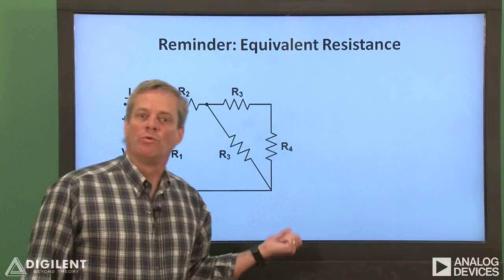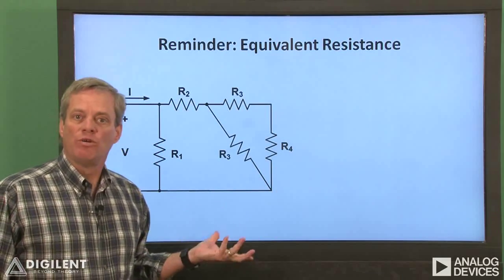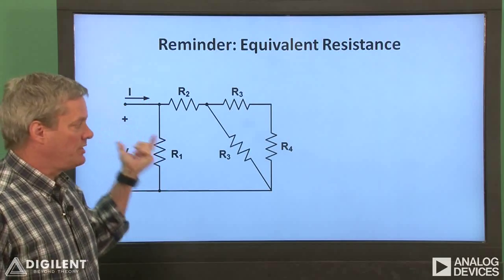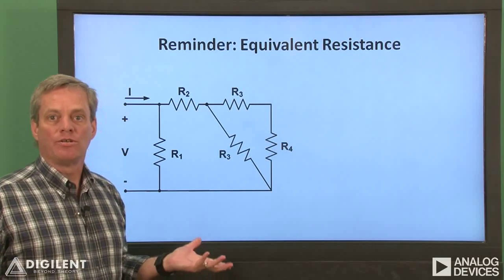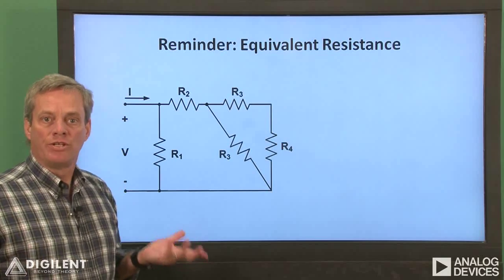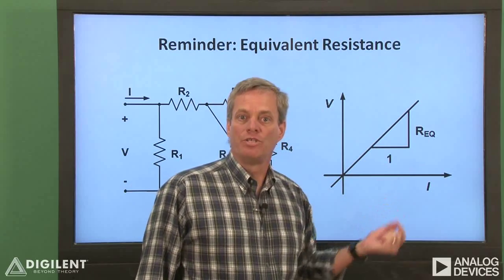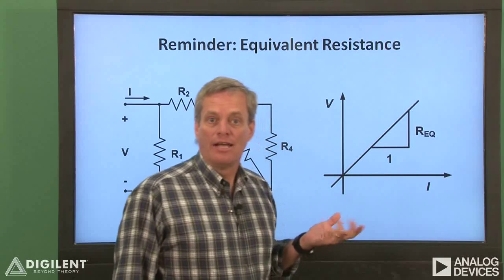Now we're going to add power sources to our network of resistors and see that the relationship between voltage and current at the terminals of the network still describes the behavior of the circuit. Here's an example circuit we used in one of our Chapter 2 videos. We could determine an equivalent resistance for this overall circuit, which simply described the relationship between the voltage and the current at the terminals. Experimentally, we could apply a voltage and measure the resulting current. The resistance of the circuit is simply the ratio of the voltage to the current at the terminals. If we applied a number of different voltages at the terminals and measured the resulting currents for each voltage, we could plot the relationship between voltage and current. The slope of the resulting line is the equivalent resistance.